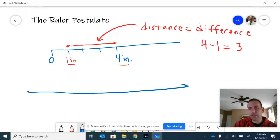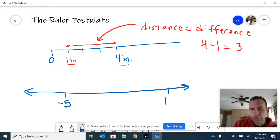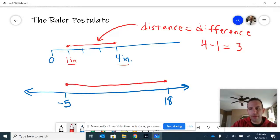For example, let's say we had a number line here and I have some point. Let's use a negative. Let's say I have negative five and somewhere past a zero to the right, we have a number like 18. How far apart are those two numbers? In other words, what would the ruler postulate say about this distance?